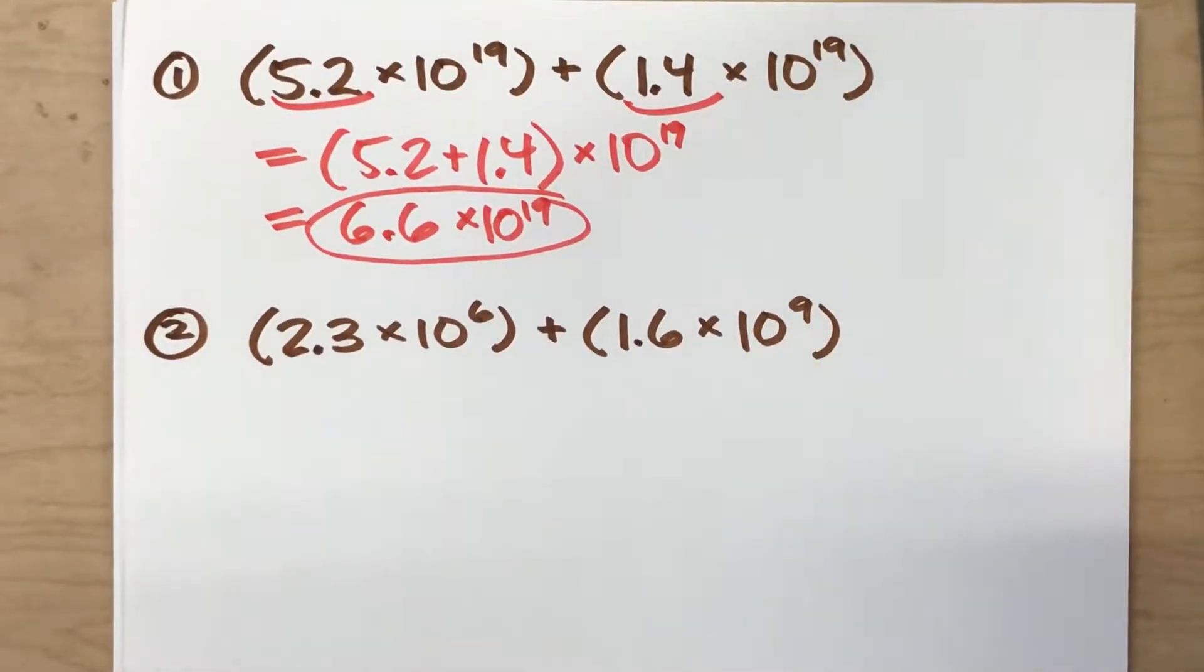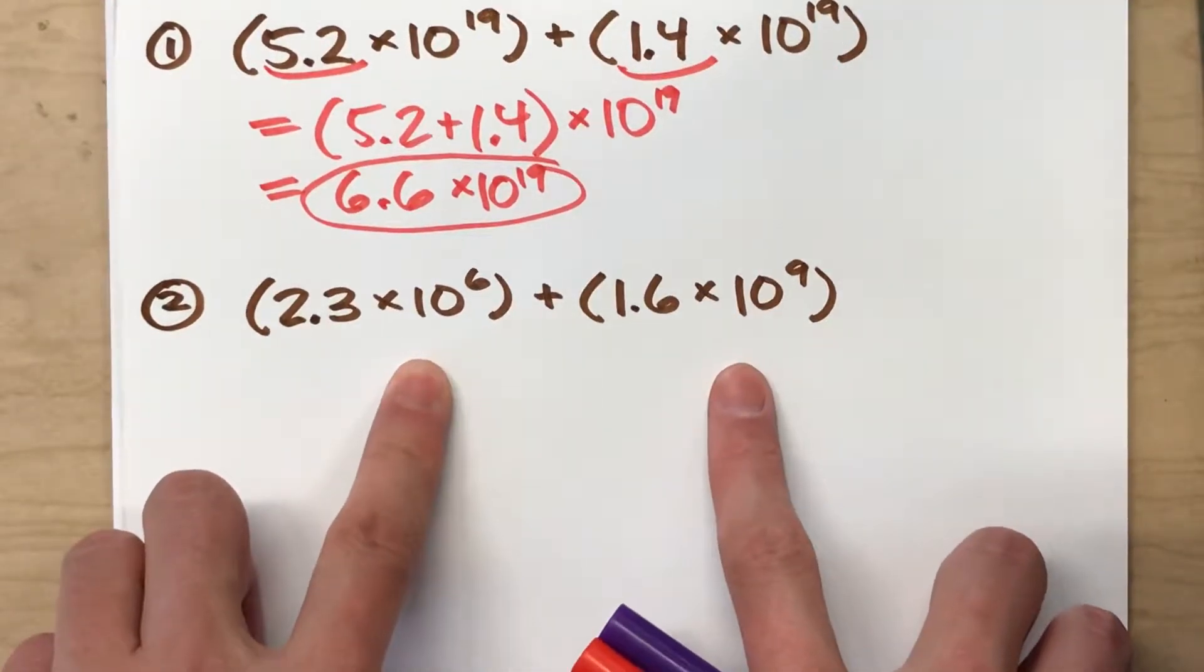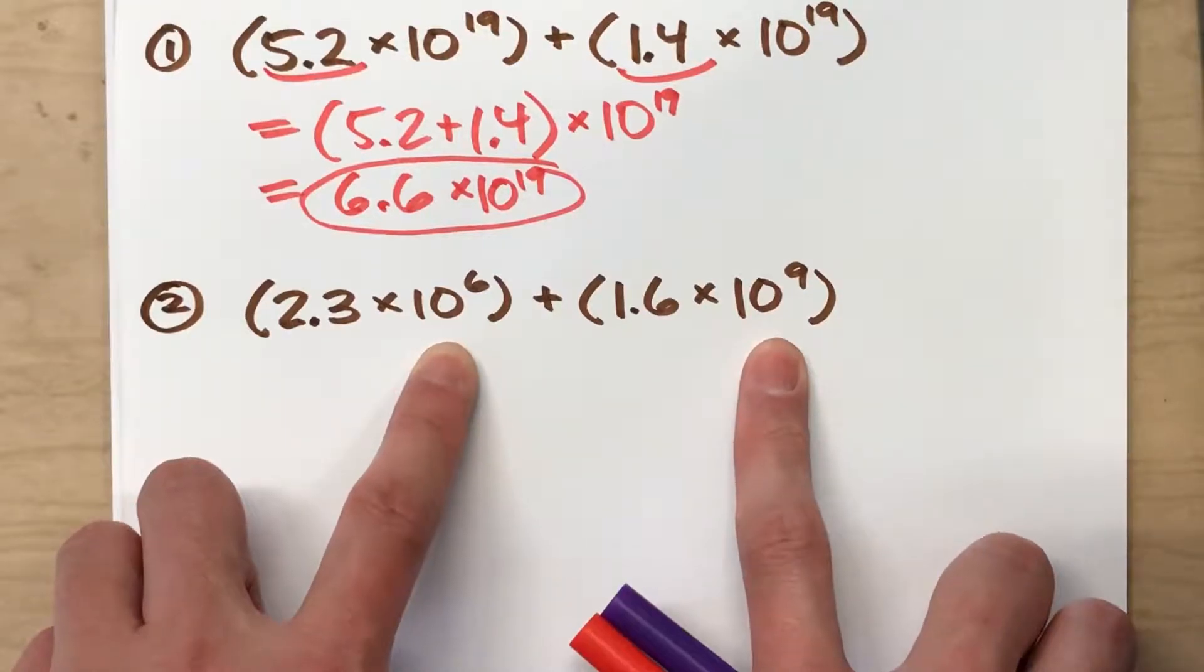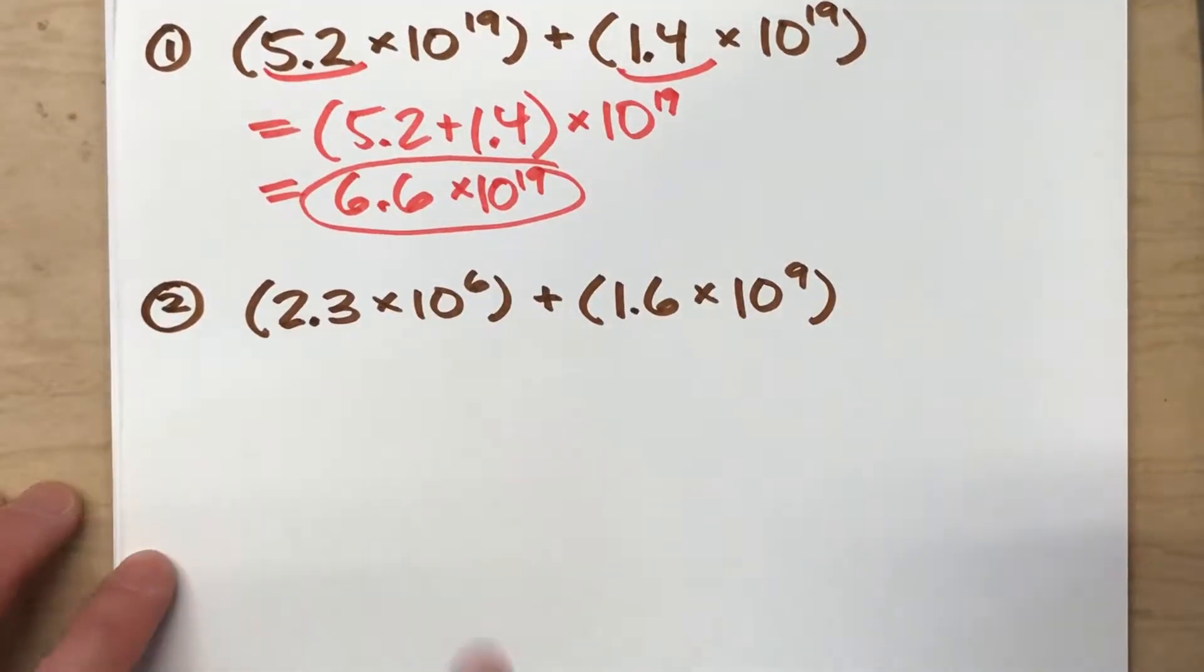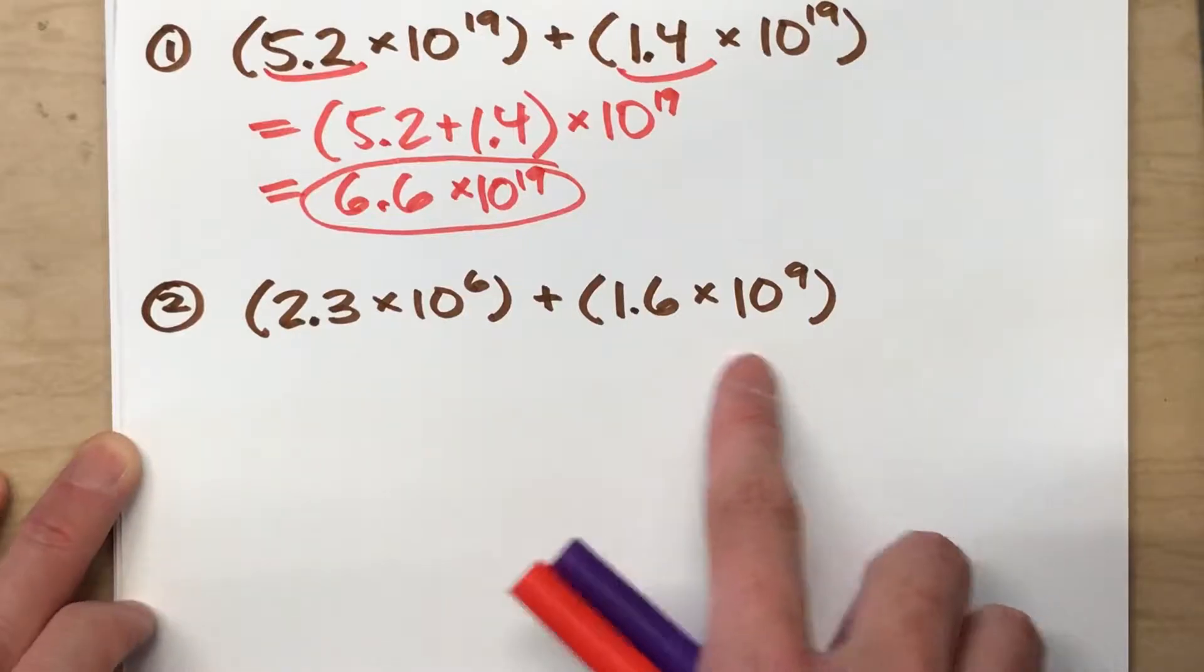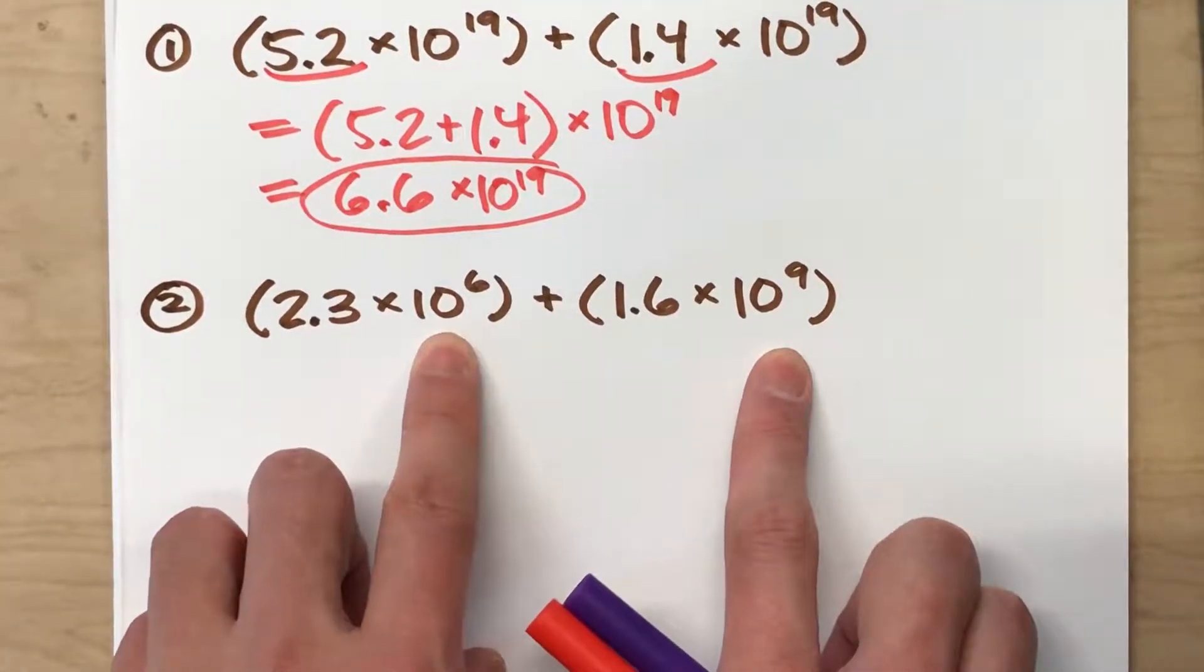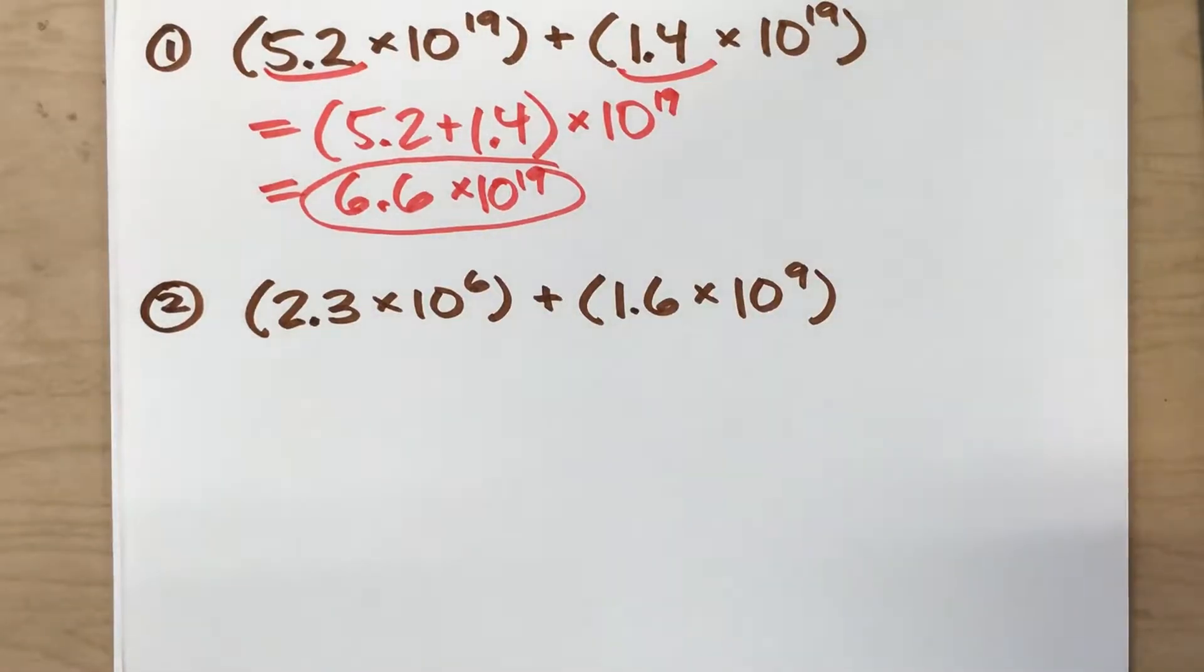What we also found today though was when you're adding two numbers in scientific notation that have different powers of 10, things are a little bit harder. So what we want to do is change one of these numbers so that they do have the same power of 10. So here's what I'm going to do.